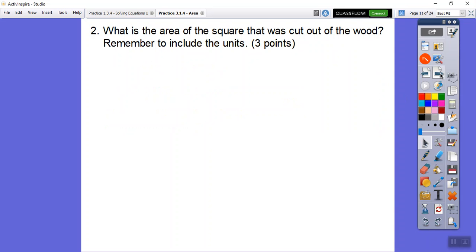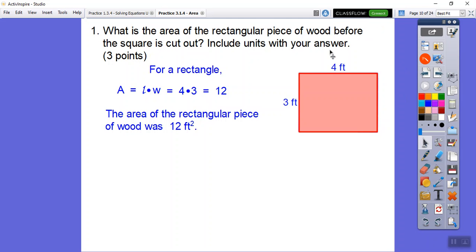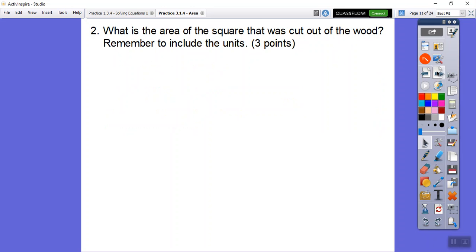What is the area of the square that was cut out of the wood? Remember to include units on this. This last one there's 3 points, so we're showing the work and then we answer the question in the context of the problem. Area is always square units, in this case feet, so square feet or feet squared. What's the area of this little square right here? We're just focusing on this little piece right here, so I'm going to take out the rest of that right there.